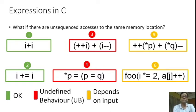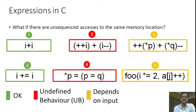Now consider expression 3. It involves two side effects on the same variable i, which are unsequenced. This yields undefined behavior (UB) in C. Similarly, expression 4 involves a read and an update to the same object P such that the two operations are unsequenced — also undefined behavior. Now consider expression 5. It involves an increment to star P and a decrement to star Q during evaluation. The two updates are mutually unsequenced, just like expression 3. This expression may or may not result in UB depending on whether star P and star Q refer to the same object.